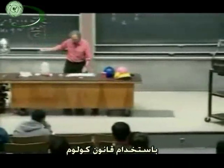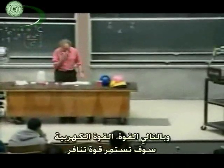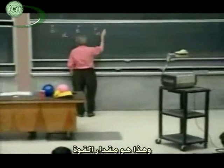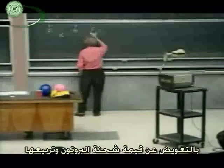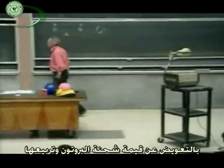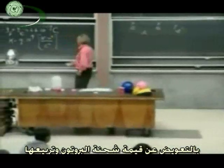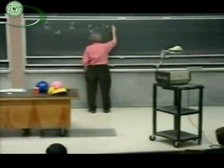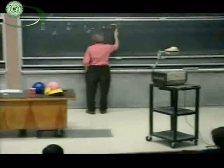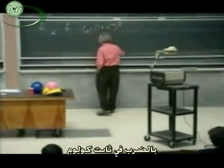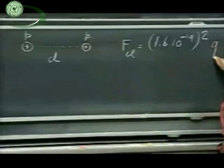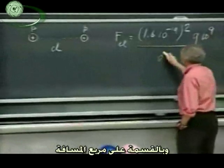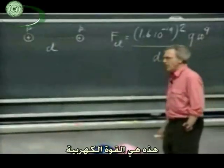The law is called after Coulomb. The electric force — just the magnitude — is the charge of the proton, which is 1.6 times ten to the minus 19, squared, multiplied by Coulomb's constant, which is 9 times ten to the ninth, divided by d squared. That's the electric force.